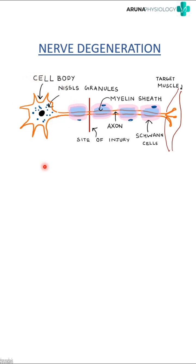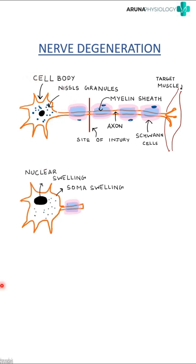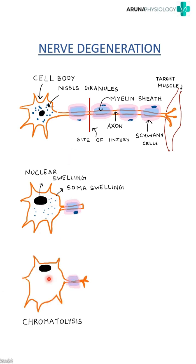In the cell body, as you can see, there will be swelling of the soma as well as swelling of the nucleus. Later on, there will be so much swelling that the nucleus will be pushed to the side and the Nissl substance will disintegrate — a phenomenon known as chromatolysis.